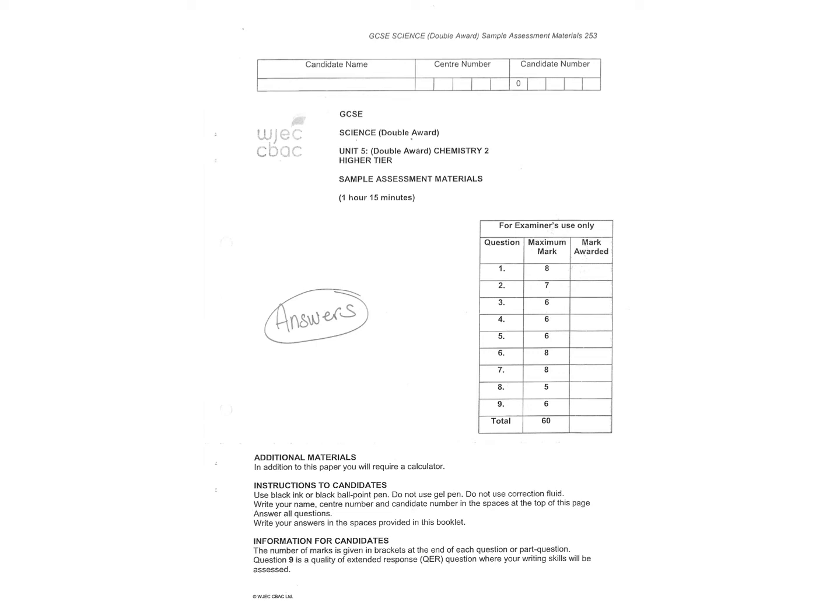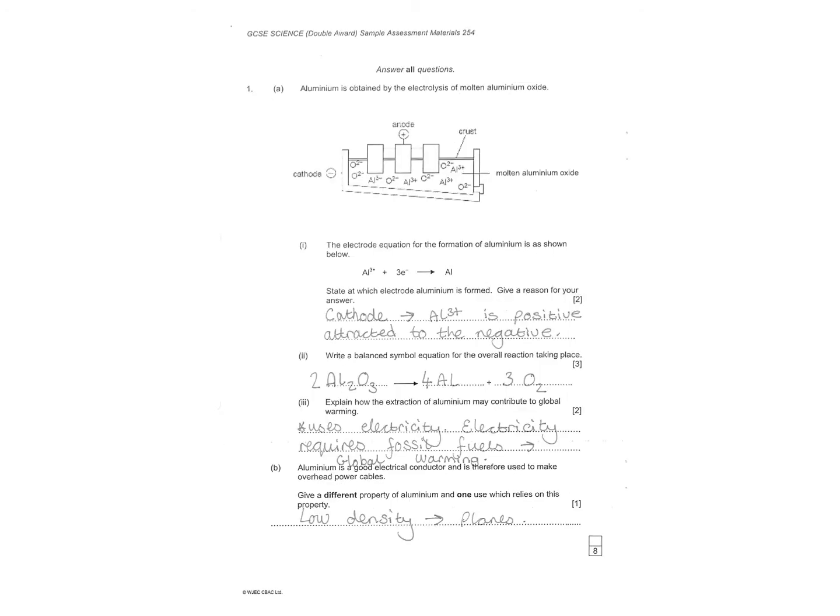So, this is the SAMS-HIRE paper. It's the first paper we would have been given to look at. First question then is looking at the electrolysis of aluminum. State which electrode aluminum is formed at.